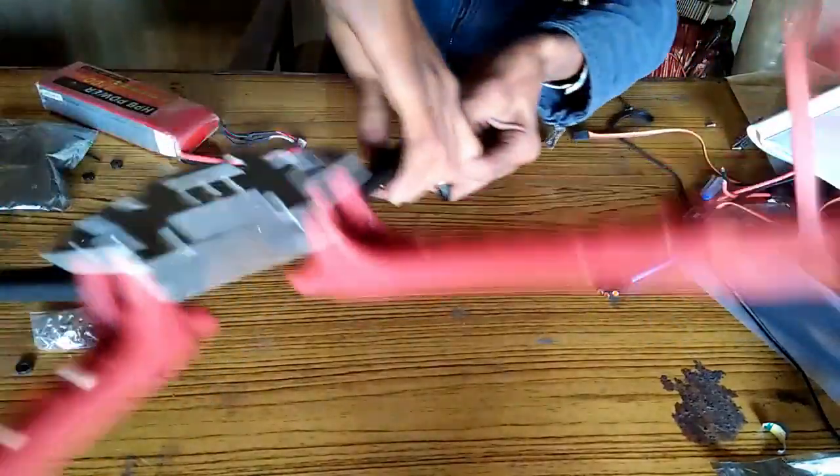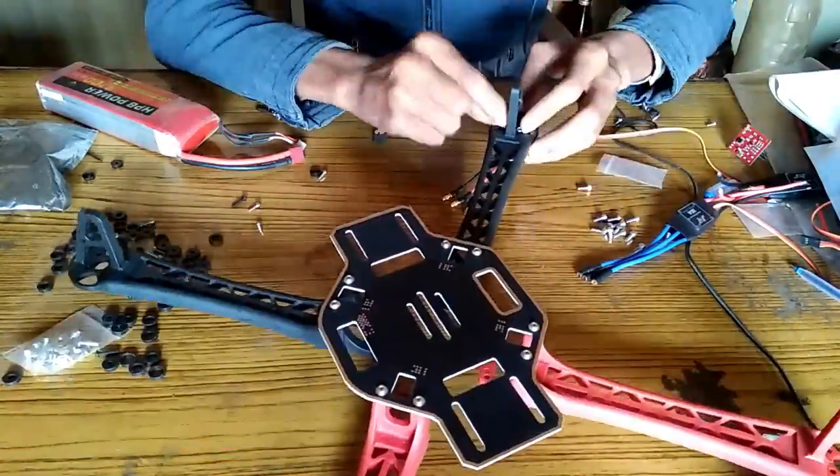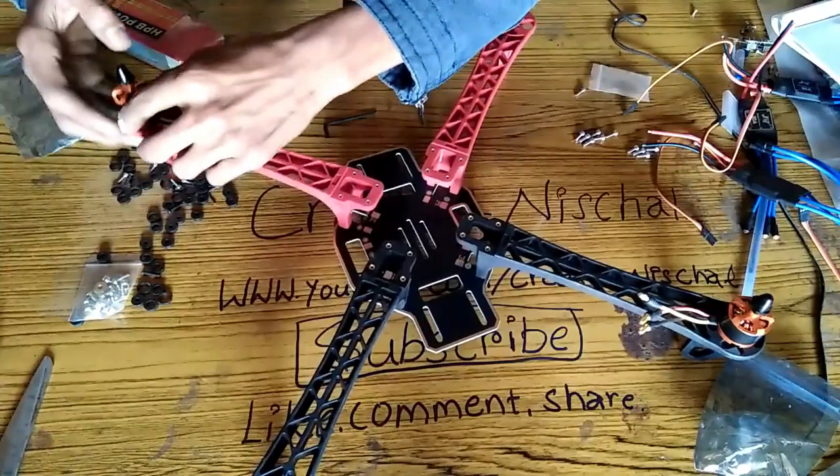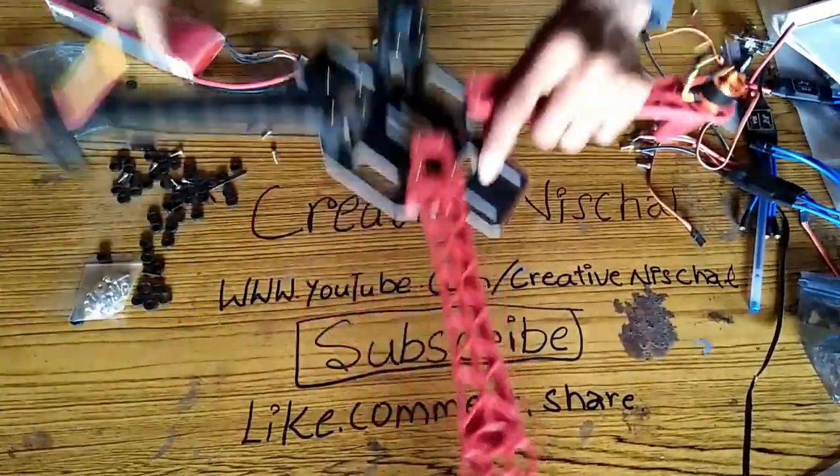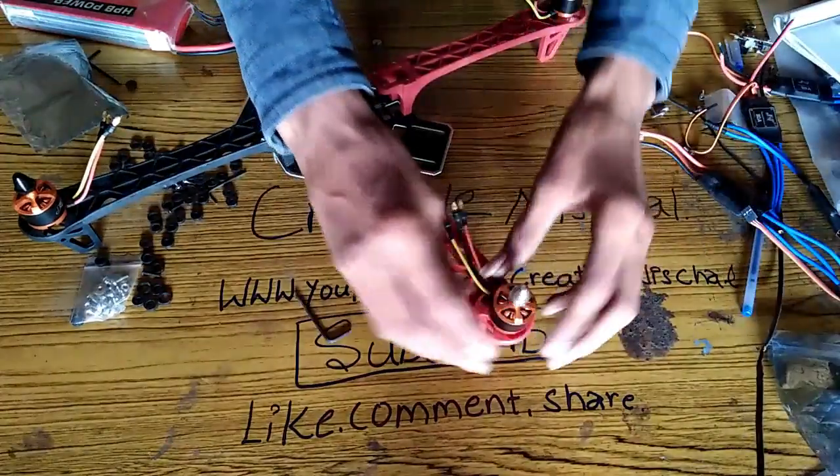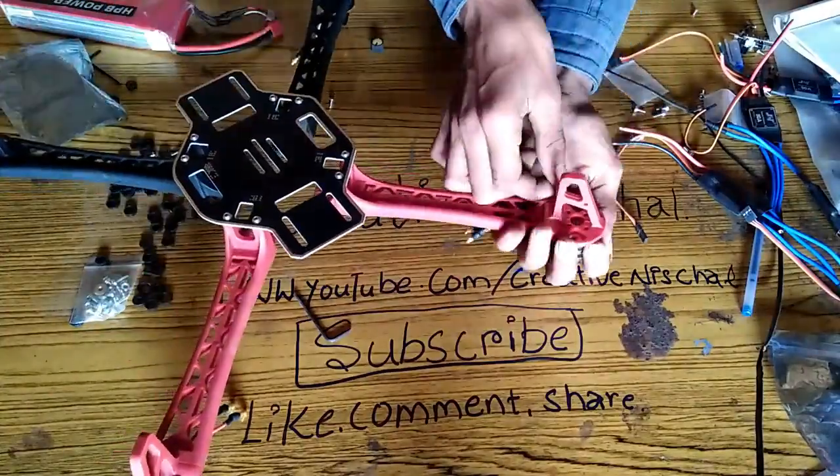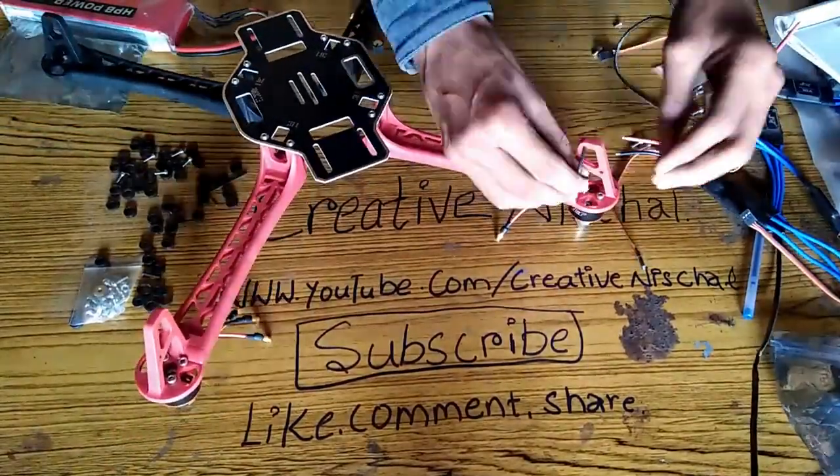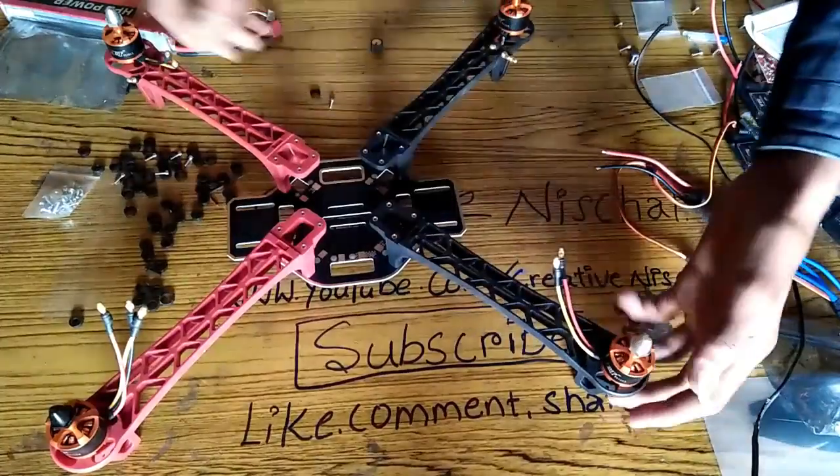Screw up all the motors. I will put second clockwise motor next to the first clockwise motor. Then after I will put the counter clockwise motor on the right red arm. Screw up all the motors.